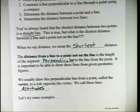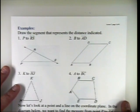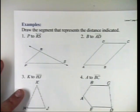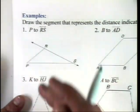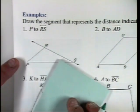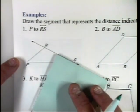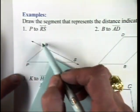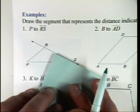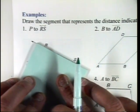Let's try drawing some of these altitudes. Number one, we want to draw the segment that represents the indicated distance. We want to find the distance from point P to line RS. Here's a trick: you get a little straight edge, and a post-it note works well. If you line up the edge of your post-it note with the side opposite the point — in this case line RS — all you have to do is slide it over until you intersect point P.